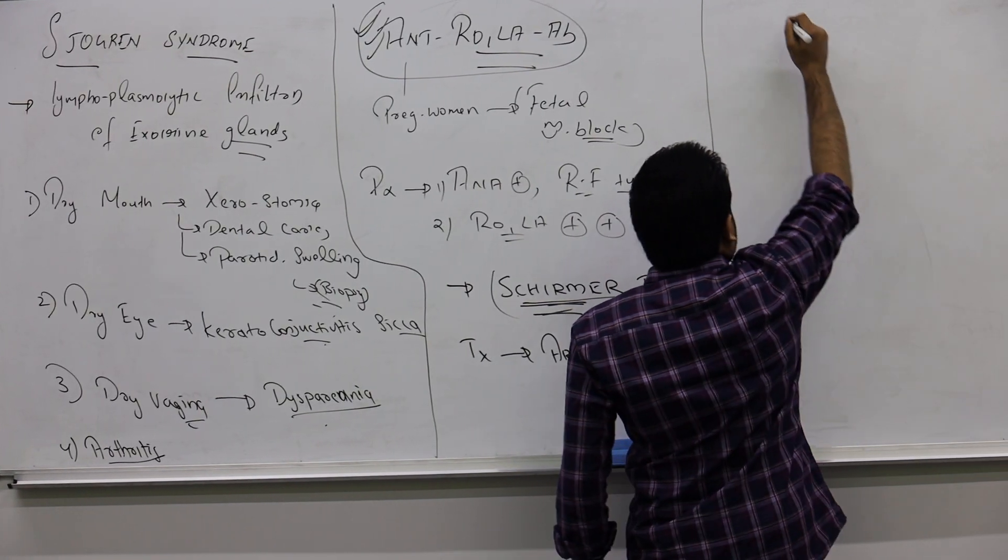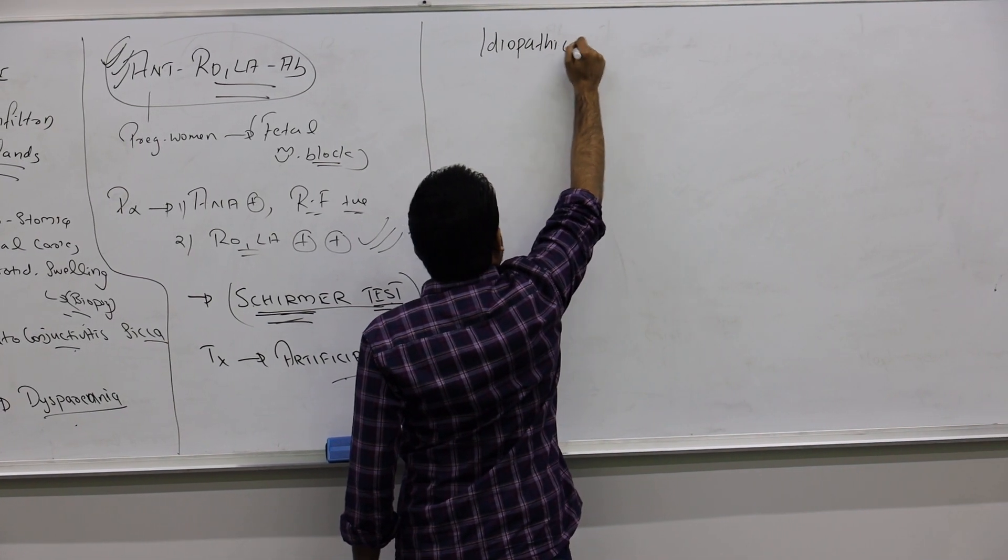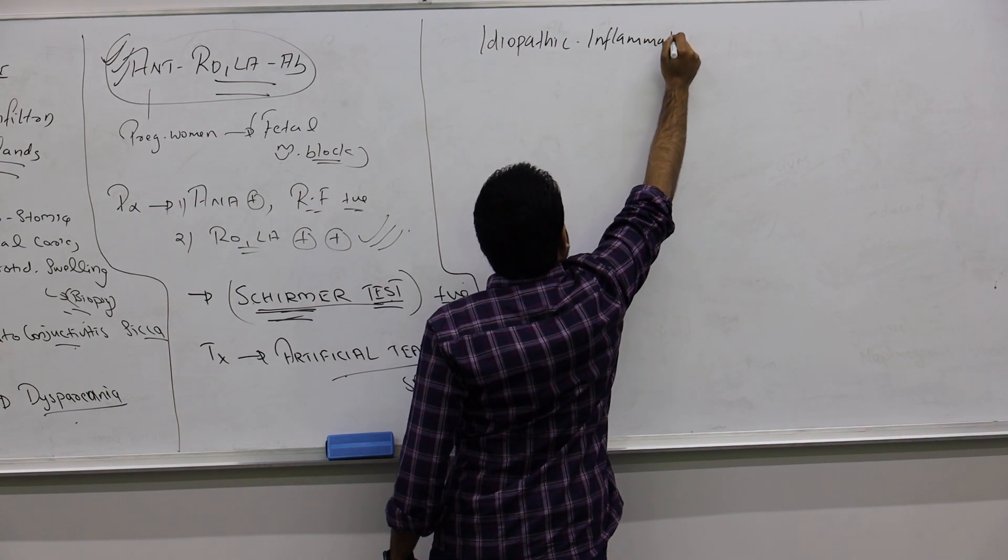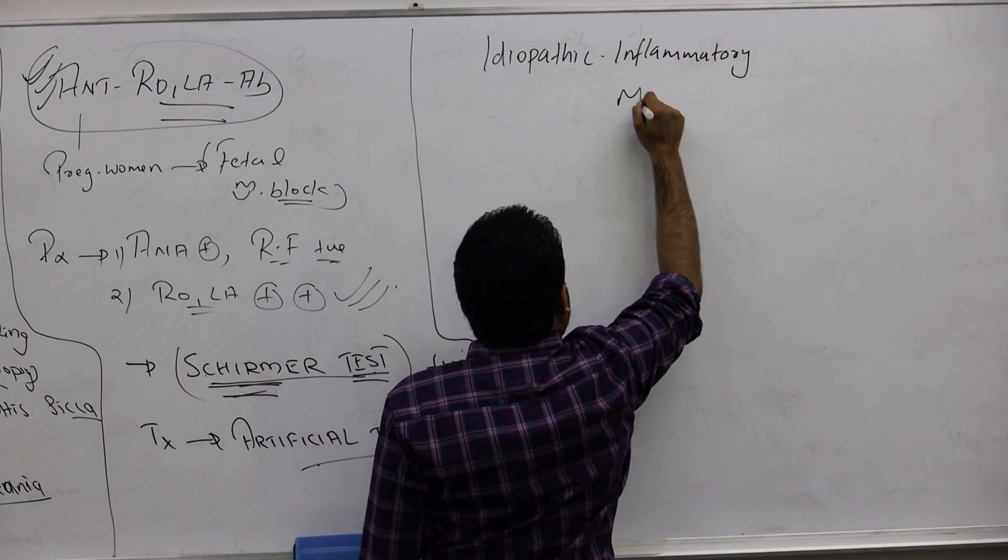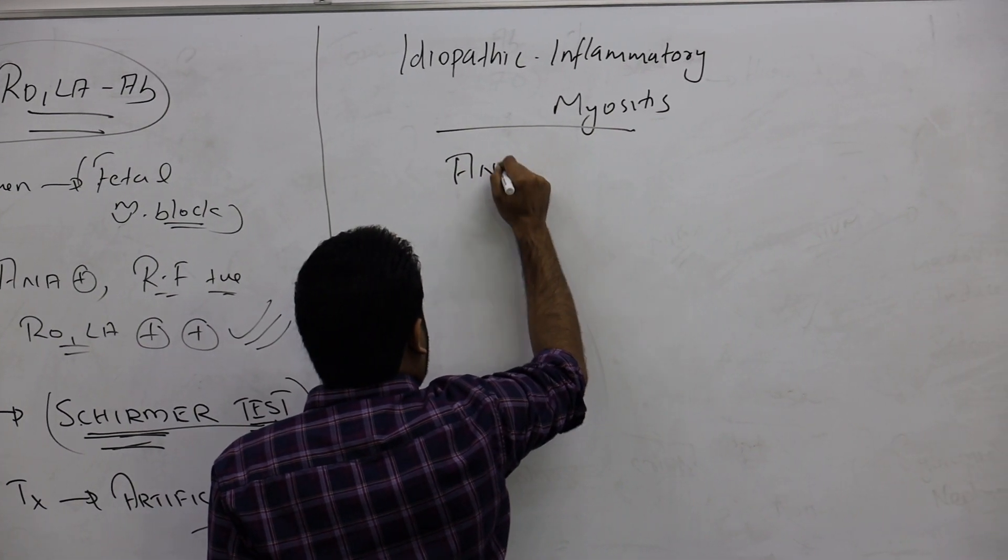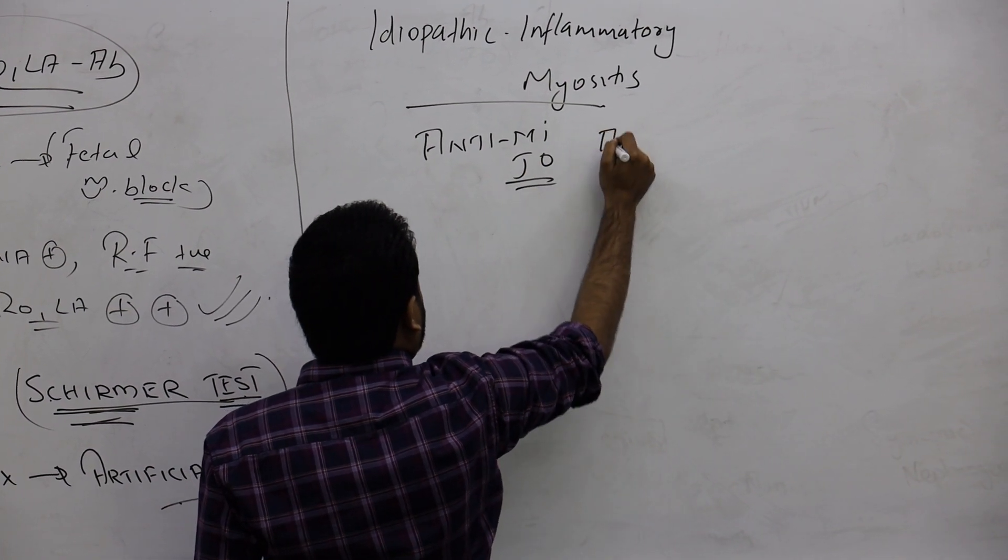Along with that, there is something called idiopathic inflammatory myositis. It is also autoimmune. You can see anti-Mi or anti-Jo antibodies here.